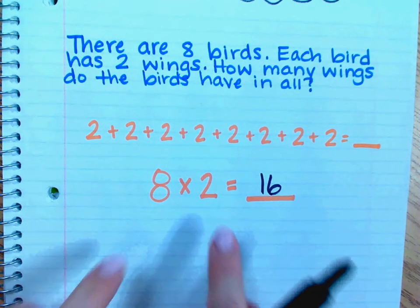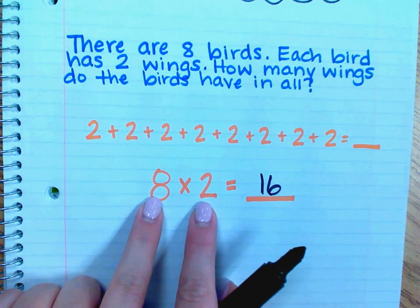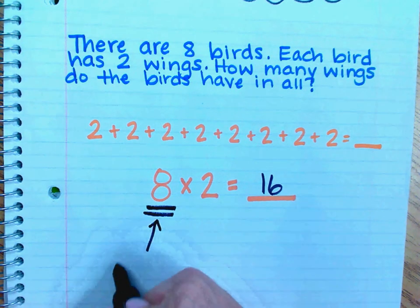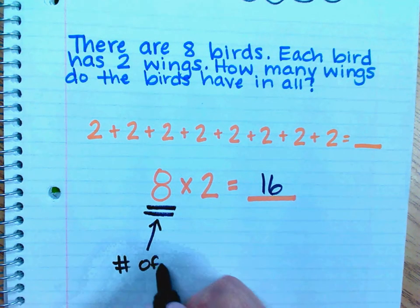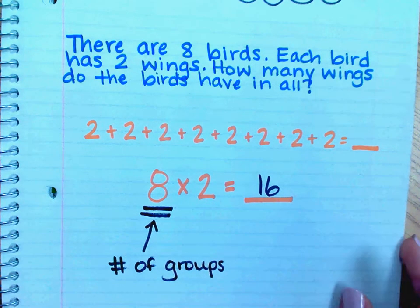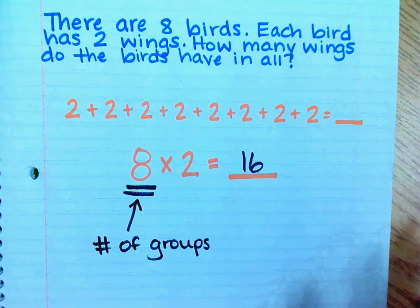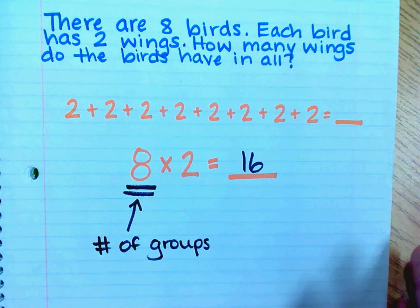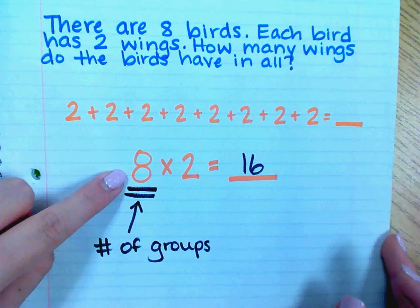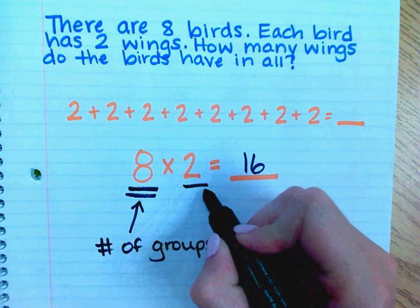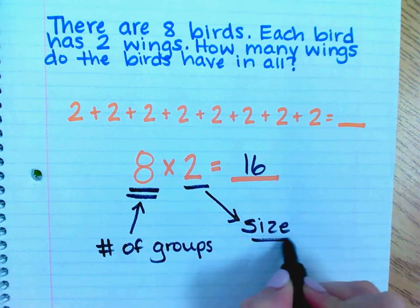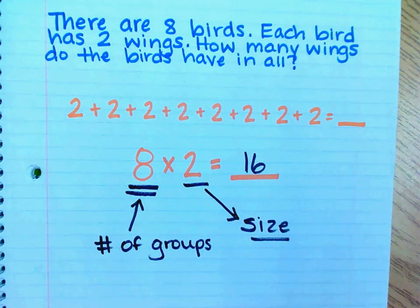In multiplication, the two numbers that you multiply together are called factors. The first factor usually represents the number of groups — we'll talk more about how it can represent something else in the commutative property video. The second factor represents the size of each group, or how many are in each group.